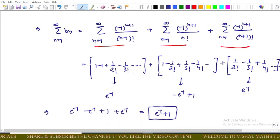And we get 1 minus 1 plus 1 upon 2 factorial minus 1 upon 3 factorial and so on. For the second series, 1 minus 2 factorial plus 1 plus 3 factorial minus 1 upon 4 factorial, and for the third series, 1 upon 2 factorial minus 1 upon 3 factorial plus 1 upon 4 factorial and so on.